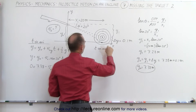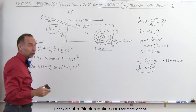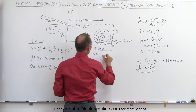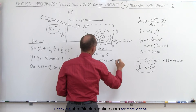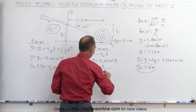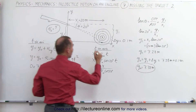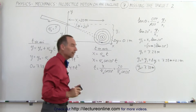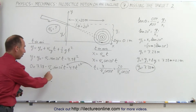We'll now do exactly the same for the x direction. In the x direction, we will not have an x sub nought term because we started at x equals 0, and there's no acceleration term because there's no forces in the x direction. So we get x equals v sub nought in the x direction times time, which is v sub nought times the cosine of 20 degrees times time. Solving this for t, we get t equals x divided by v sub nought times the cosine of 20 degrees. The target is 20 meters away, so that's 20 divided by v sub nought times the cosine of 20 degrees.